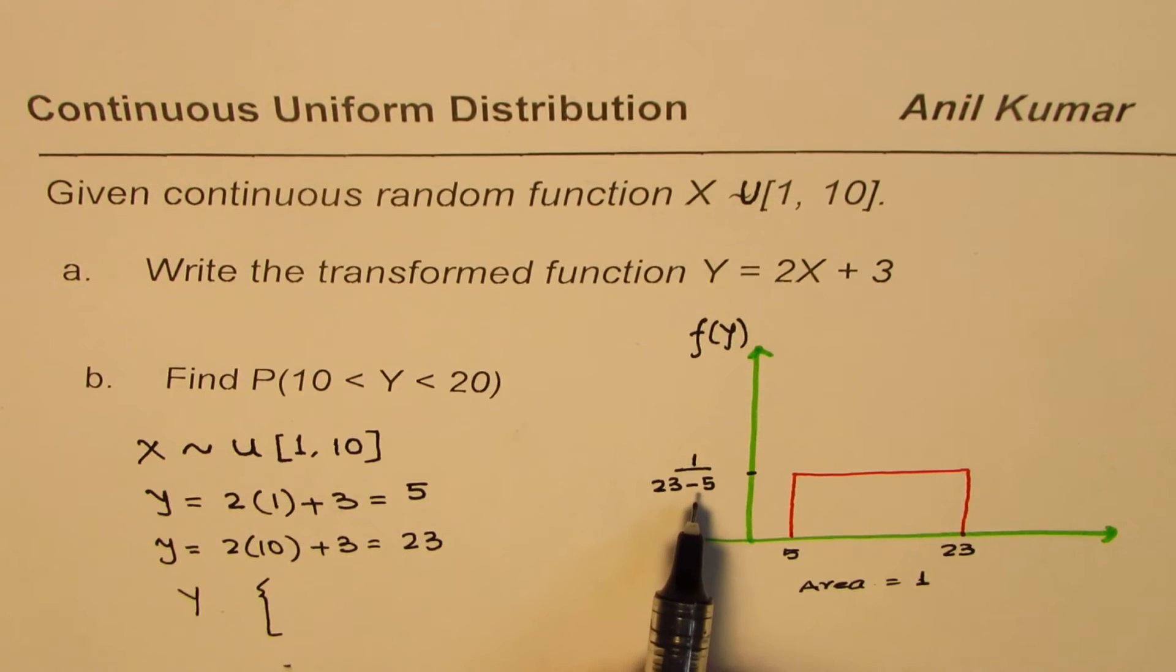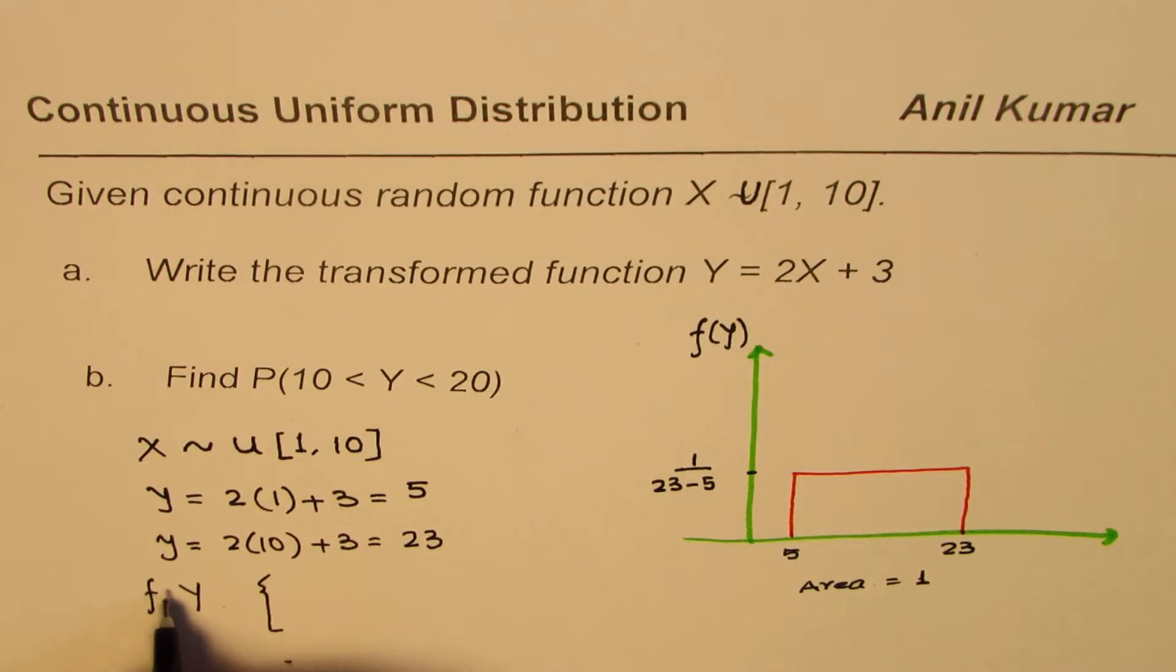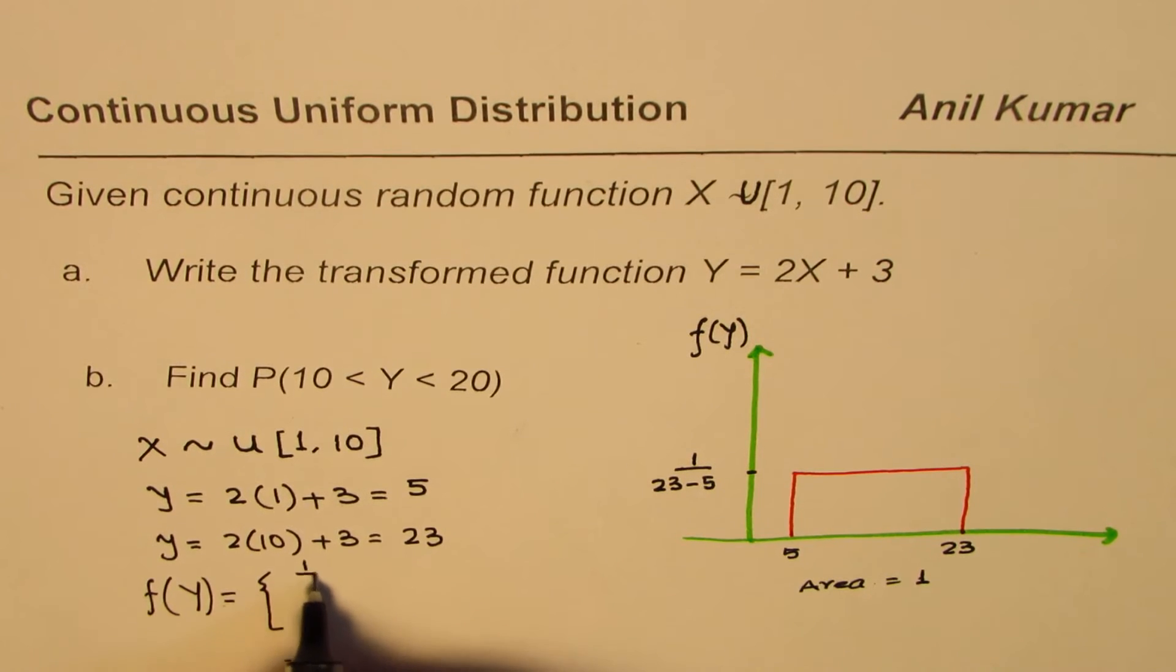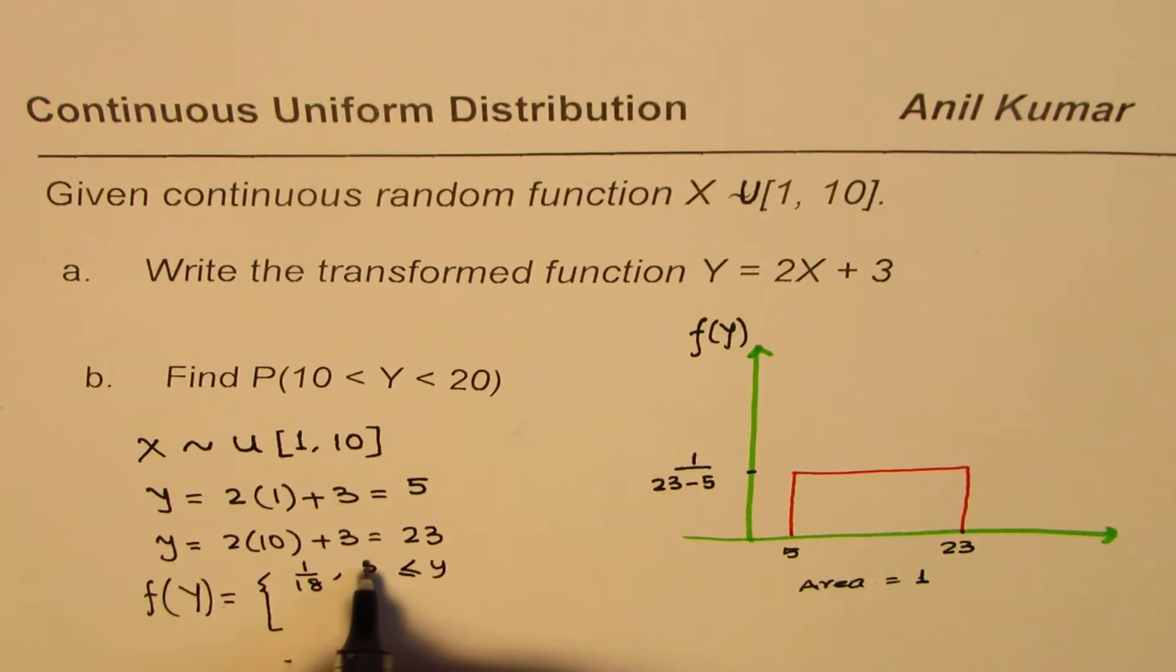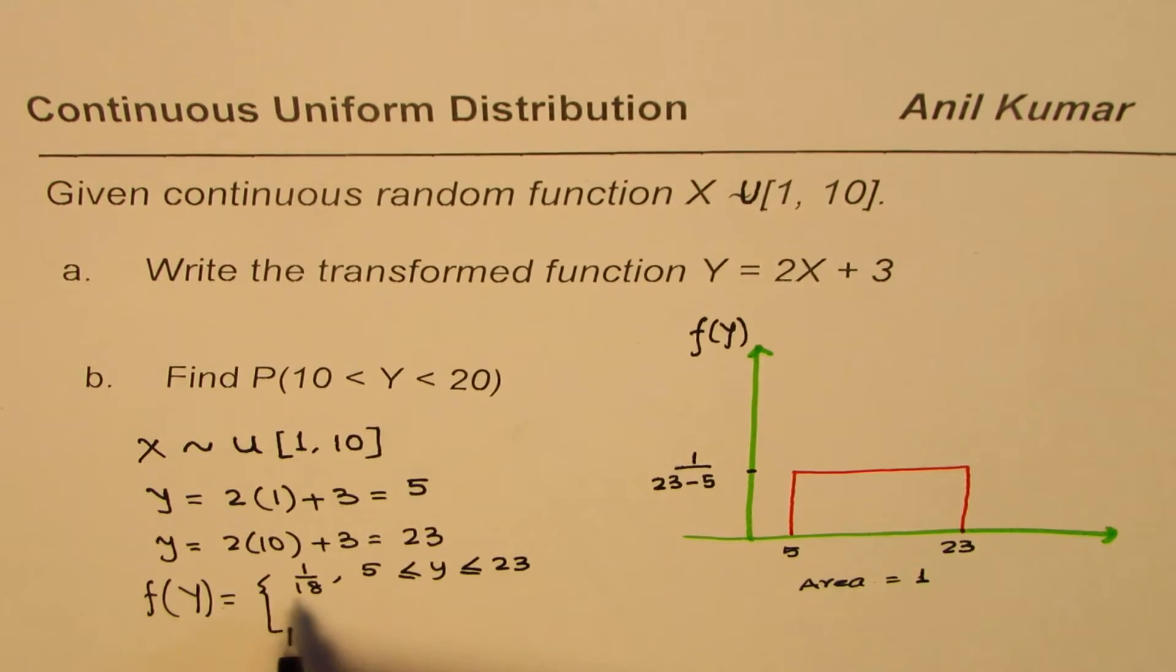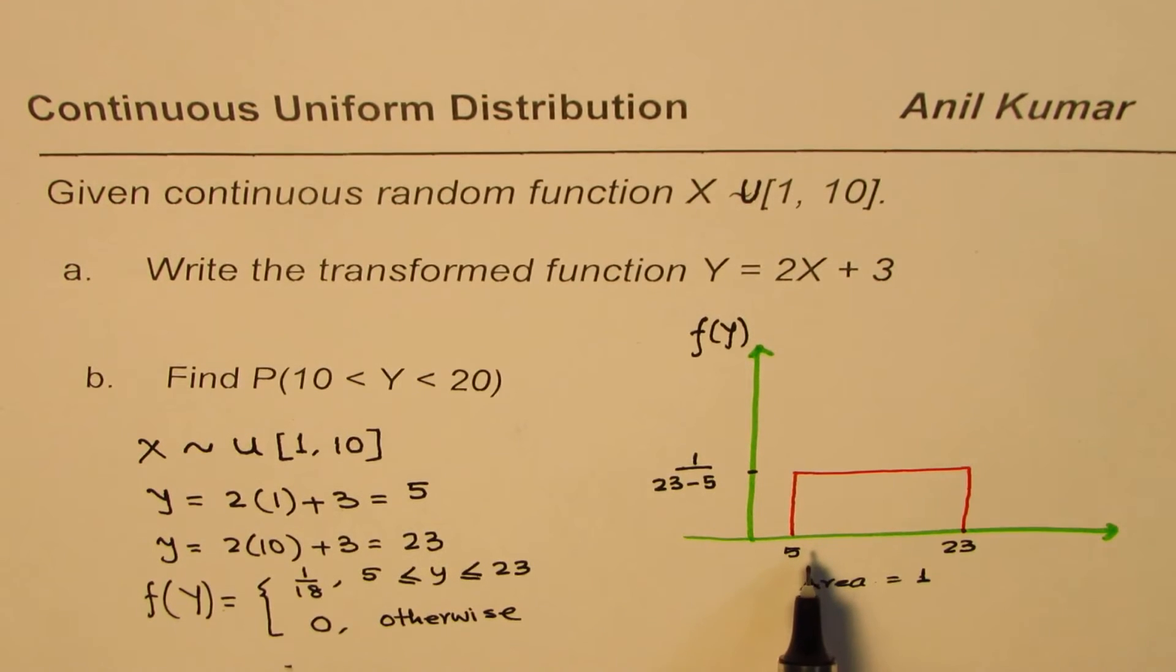23 minus 5 is 18. So the value of Y, or we can say f(y), is equal to 1 over 18, when Y is greater than or equal to 5 and less than or equal to 23. And it is equal to 0 otherwise, for any other value. So that is how you can define the function. I hope that is absolutely clear.